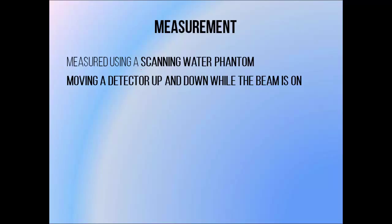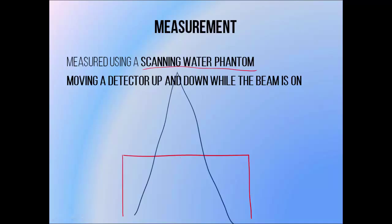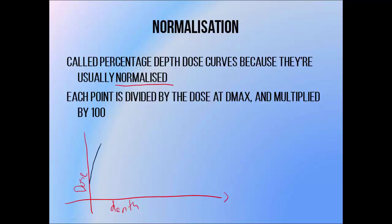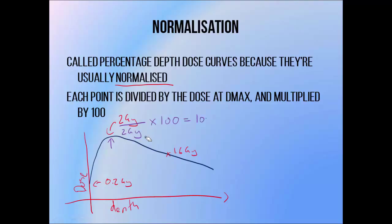Depth dose curves are generally measured using a scanning water phantom. They are obtained by moving a detector up and down and measuring dose while the beam is on. This allows us to determine how dose varies with depth in water, which we class as equivalent to patient soft tissue. We call them percentage depth dose curves because they're normally normalized by choosing one point on the curve, normally the depth of maximum dose, or D-max, and dividing the dose at every depth by this dose and multiplying by 100.